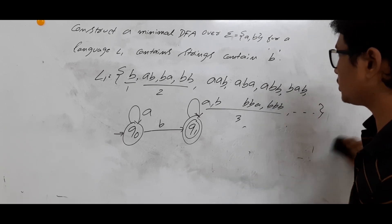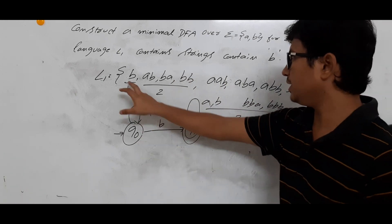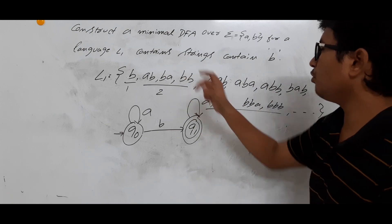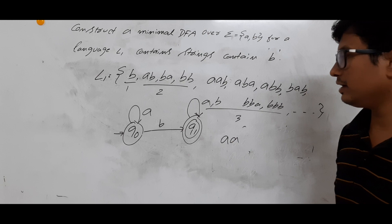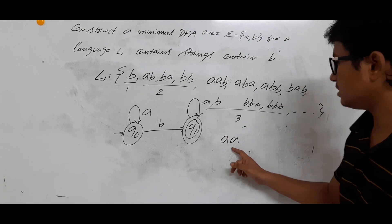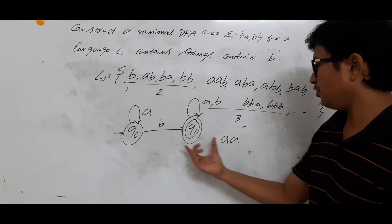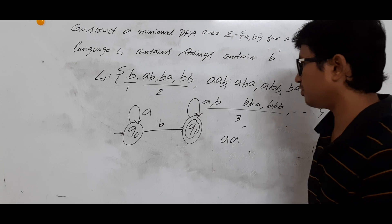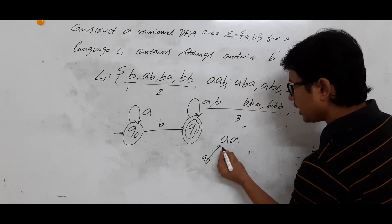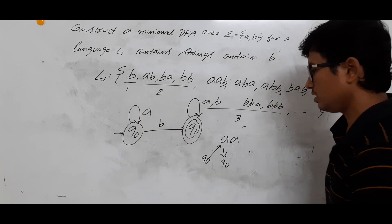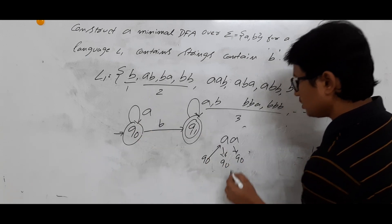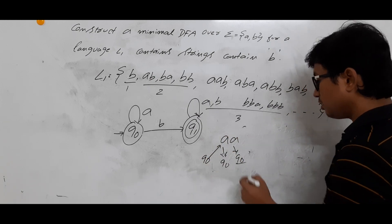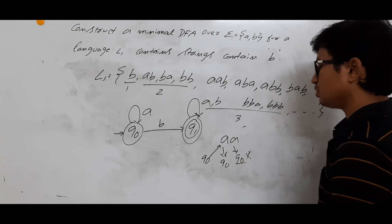Let's verify the strings we listed. Single b is accepting. ab is accepting. ba is accepting. bb is accepting. Now what about aa? aa should not be accepted because it does not belong to L1. Tracing aa: q0 on a goes to q0, q0 on a goes to q0. We end up in q0, which is not a final state, so it is not accepted.